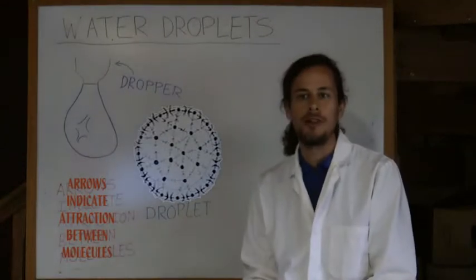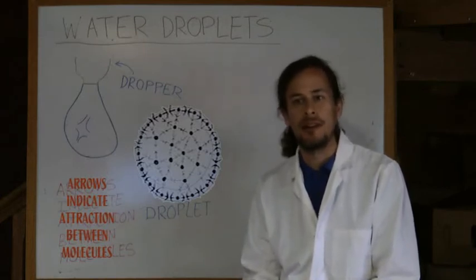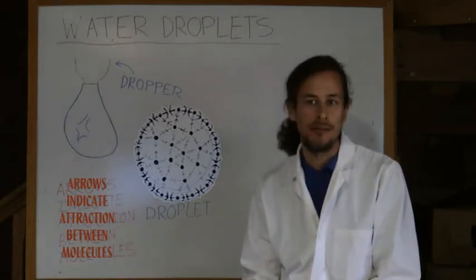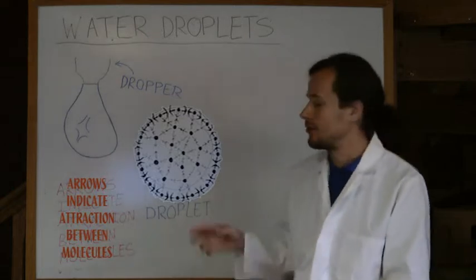A water droplet in free fall, in a vacuum, is free of adhesive forces, and its shape depends totally on cohesive forces and gravity. The cohesive forces pull towards the centre of the droplet.